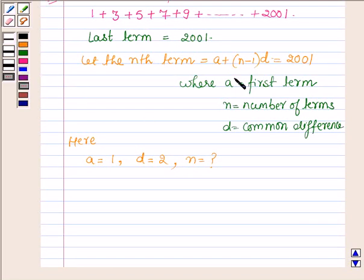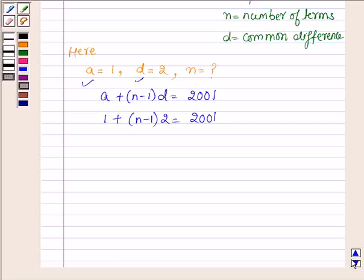Now since a plus n minus 1 into d is equal to 2001, so on substituting the values of a and d, we have 1 plus n minus 1 into 2 is equal to 2001.